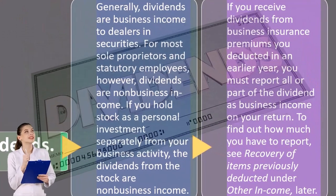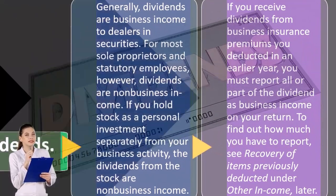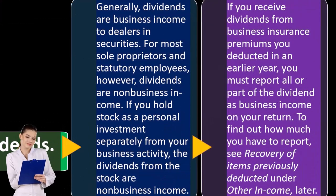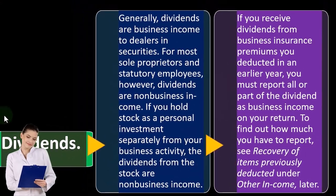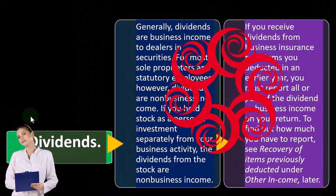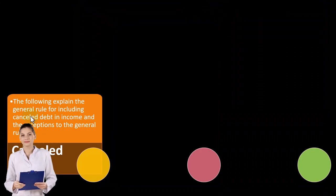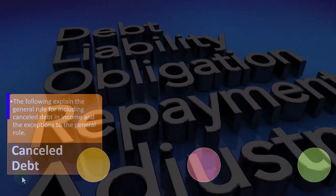If you receive dividends from business insurance premiums you deducted in an earlier year, you must report all or part of the dividend as business income on your return. To find out how much you have to report, see the recovery of items previously deducted section under other income.